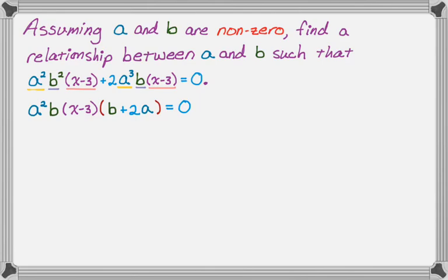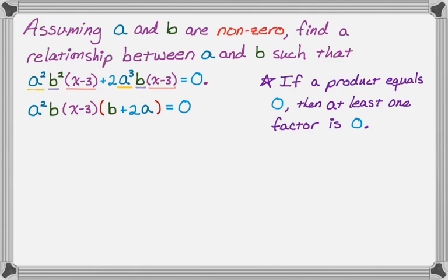Okay, so now what I need to do is look at what I'm dealing with and figure out how to do the problem. So remember, we're looking for non-zero values of A and B, and we want relationships between A and B such that this thing equals zero. So what I'm going to use now is the fact that if a product equals zero, then at least one of its factors must be zero. That's the only way you're going to get zero. So let's look at each factor individually.